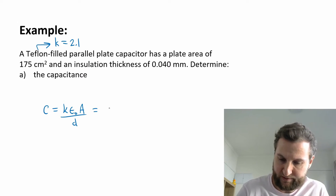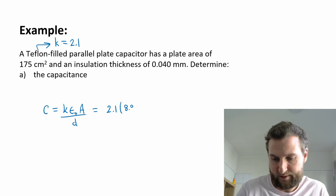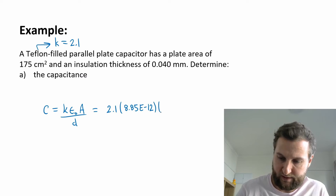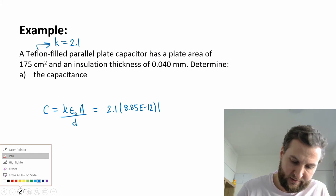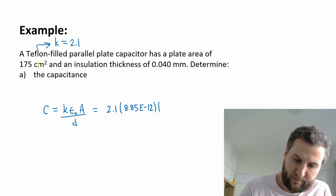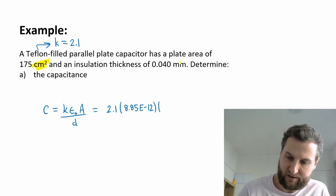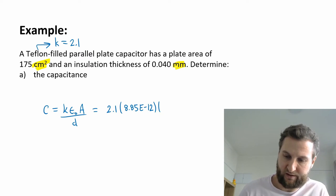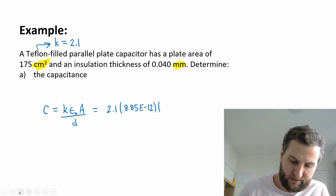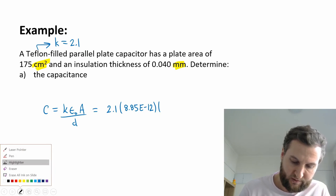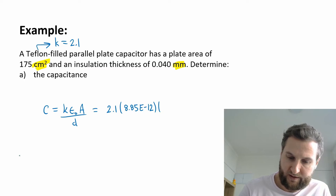Let's sub in my numbers. Kappa is 2.1. Epsilon is 8.85 times 10 to the minus 12. Area is 175. Now this area is in centimeters squared, and for my SI units I need meters. Same with the distance here is in millimeters. So I need to do some work to convert these into SI units.